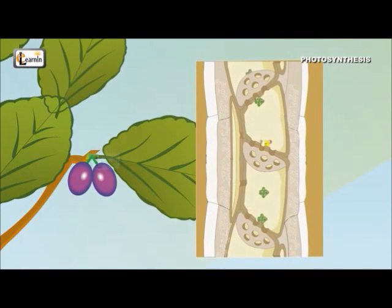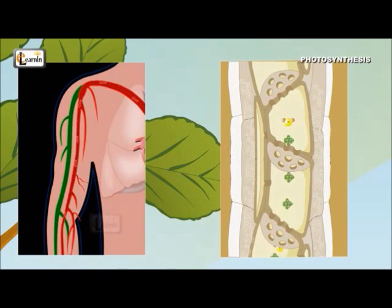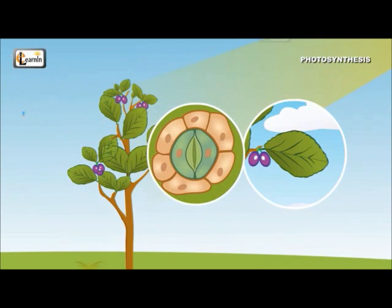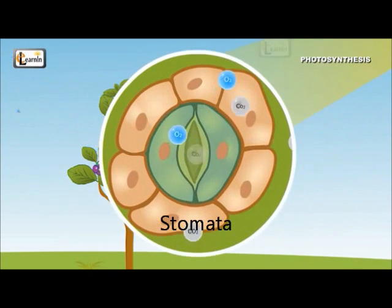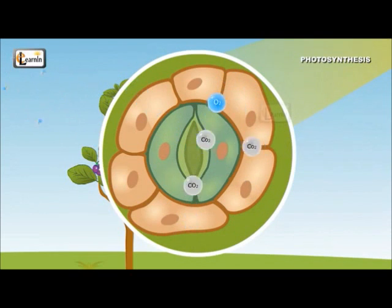The xylem transports vital nutrients to the entire plant. Xylems in the plant are like blood vessels in the human body that act as an important means of transportation of water and nutrients. Leaves on the plant have pores, very similar to the pores on the skin of our bodies. These pores are called stomata, and are responsible for the exchange of gases. The carbon dioxide present in the air, which is responsible for photosynthesis, enters the plant through these stomata.